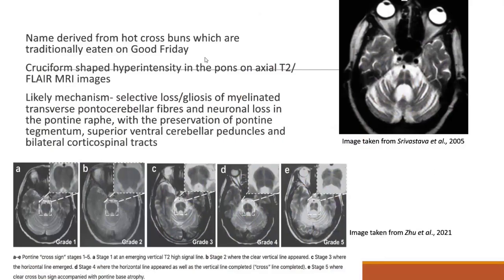The name is derived from the hot cross buns, which are traditionally eaten on Good Friday. It refers to the radiological findings of cruciform-shaped hyperintensity in the pons, which can usually be seen on axial T2 MRI images, and very occasionally on FLAIR MRI images. The pathogenic mechanism is most likely the selective loss or gliosis of myelinated transverse pontocerebellar fibres, neuronal loss in the pontine raphe, and preservation of the pontine tegmentum, along with possible sparing of the bilateral corticospinal tracts — causing this cross-shaped pattern in the pons.